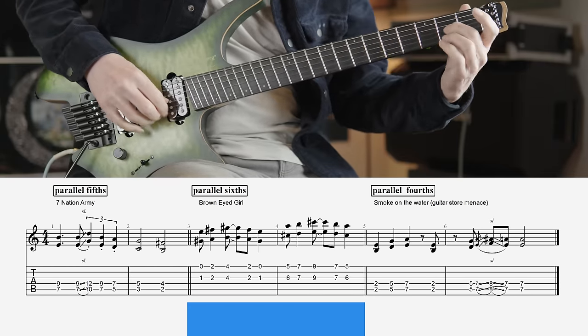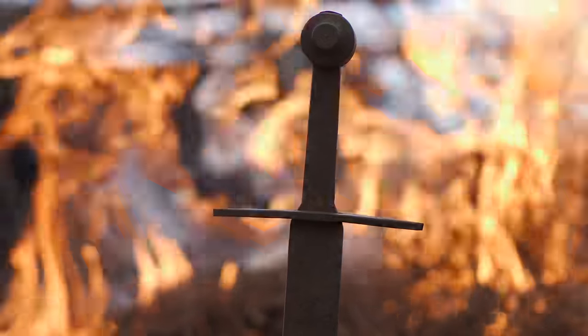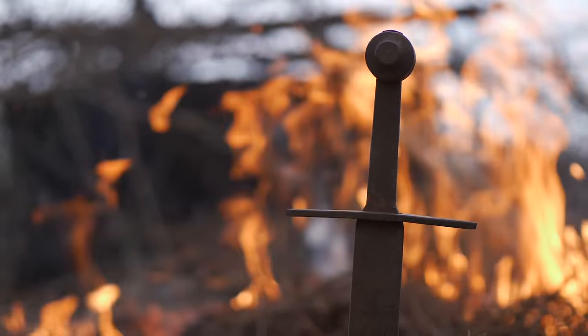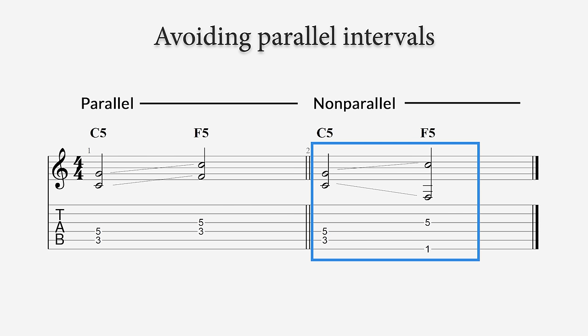Parallel intervals are intervals such as the fifth and fourth that move consecutively over different frets. This has its origin in very old, medieval music and has a very distinct sound. Later, in the 14th century, using these parallel intervals was prohibited and strongly discouraged — I remember having to learn this in counterpoint classes at the Music Academy. It was only in the beginning of the 20th century that parallel intervals were used with consent. Nowadays in western music, in any style, parallel intervals are common and can create a recognizable and beautiful sound. Some guitarists even double their riffs in fourths or fifths to create a thick and darker sound.